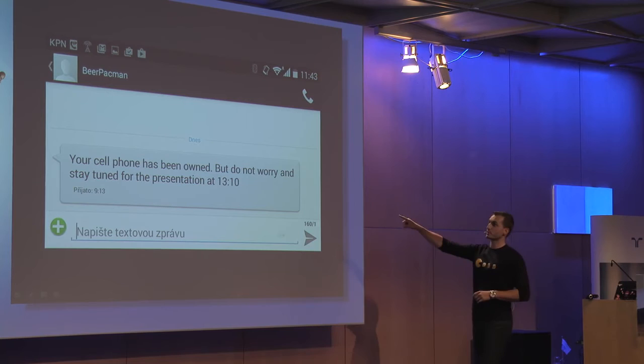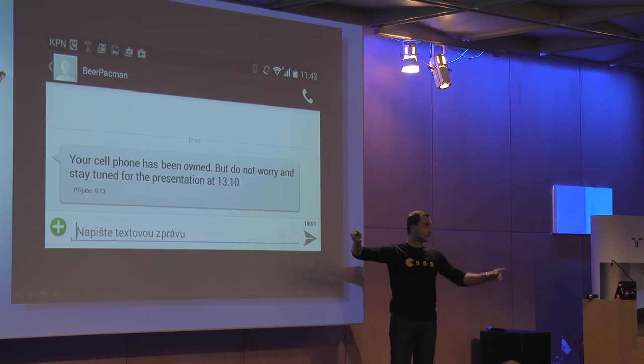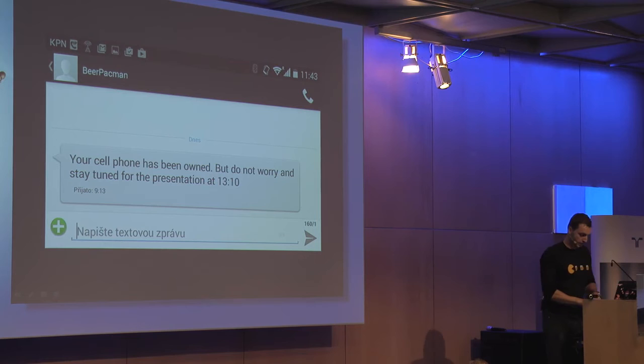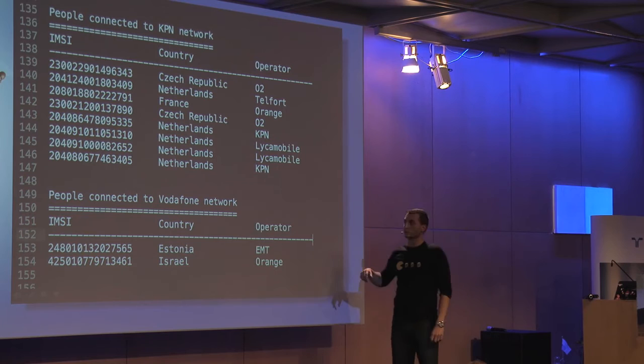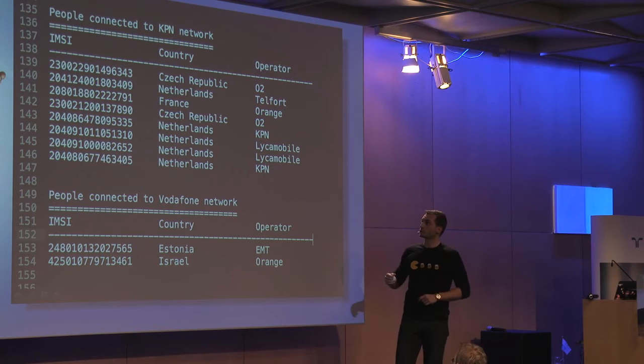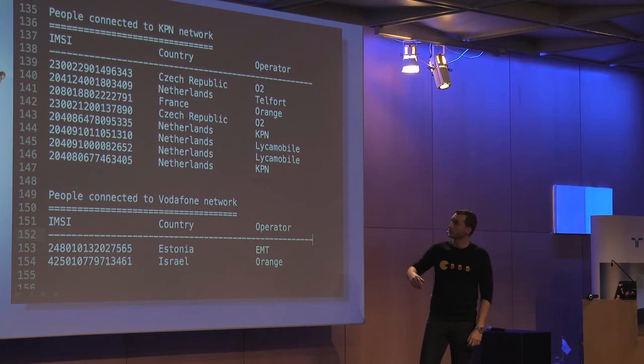Some of you here received this message. Can you raise your hands? Who received this? There are just a few of you — yeah, over there, over there. Don't worry — that was actually me. And we can see that these people — we didn't want to blast it to all of you because it's also jamming your cell phone, so you would not be able to make calls. But basically I can — we have here seven or eight numbers. We can see where everyone is from.